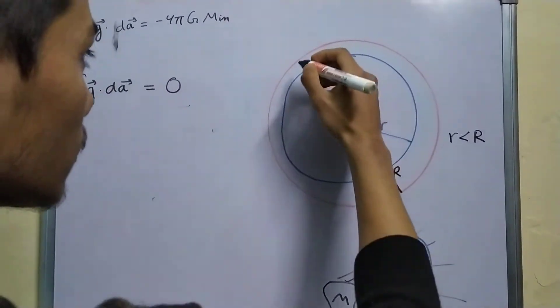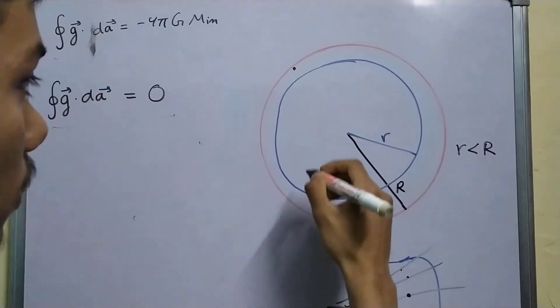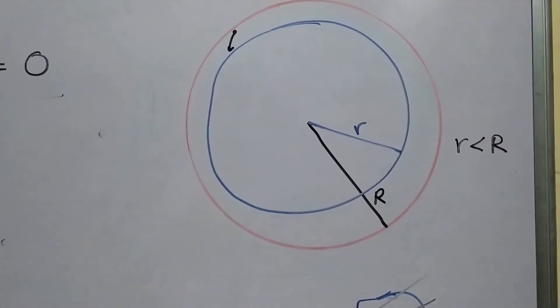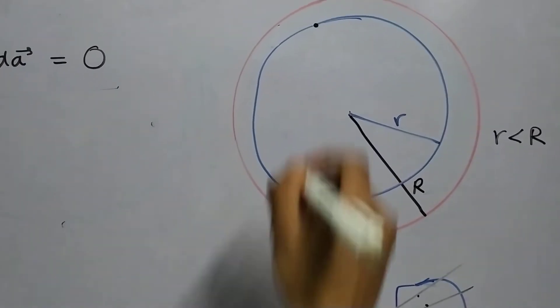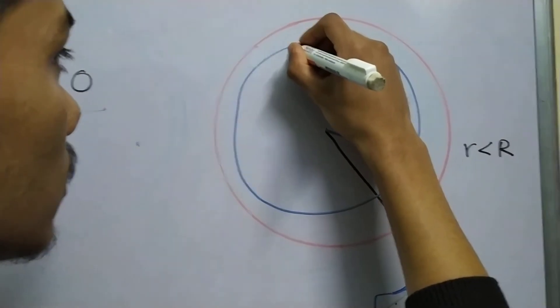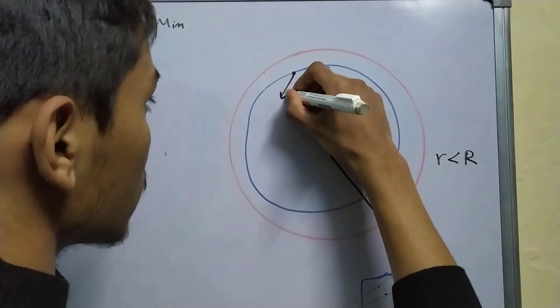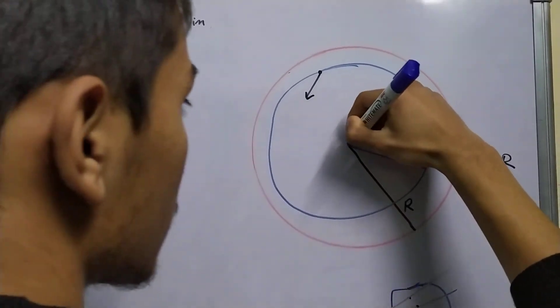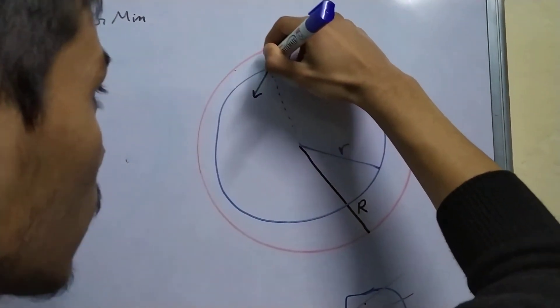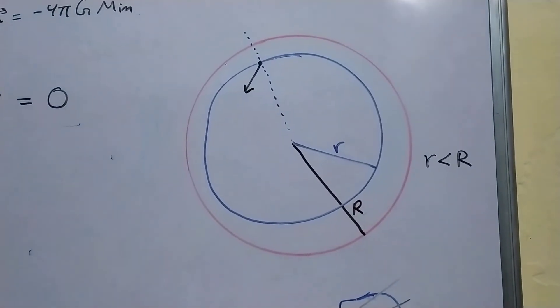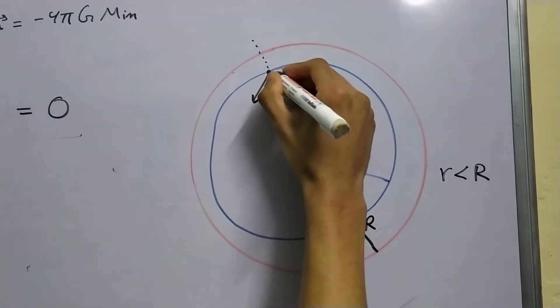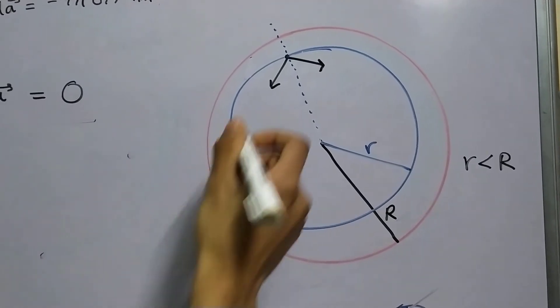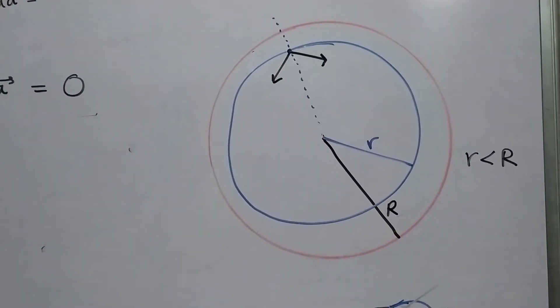Well, the answer lies in the symmetry of this distribution. Let's just say that the field is in this direction. Now, since the distribution is symmetric about the radius, there will be some field in this direction as well.